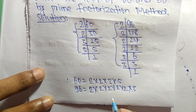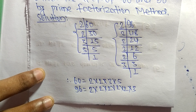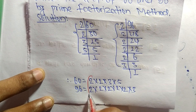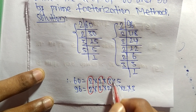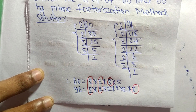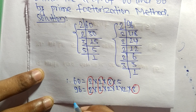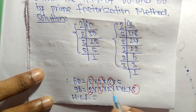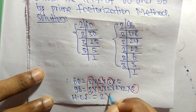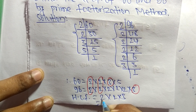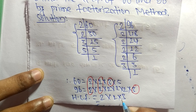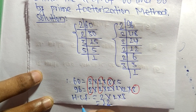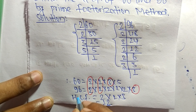Now we select the common factors from these prime factorizations. The common factors here are 2, 2, and 3. So the HCF is equal to 2 times 2 times 3. That is 2 times 2 equals 4, and 4 times 3 equals 12. So 12 is the HCF of 60 and 96.